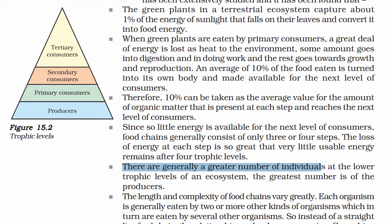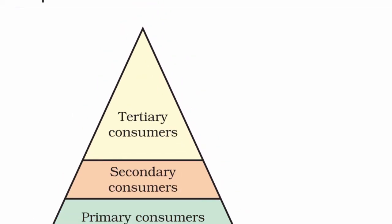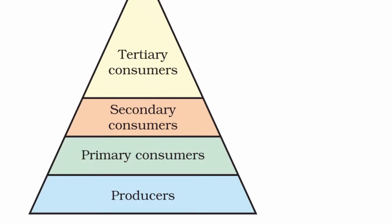There are generally a great number of individuals at lower trophic levels of an ecosystem — the greatest number being the producers. There are many producers, fewer primary consumers, even fewer secondary consumers, and the least tertiary consumers. This forms a triangle, or pyramid of trophic levels.